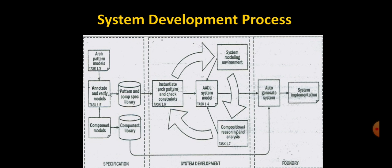This diagram represents the system development process. As you can see, the three phases are clearly marked with dotted lines: the specification phase, the system development phase, and the foundry phase. Now, one by one, we will see how these subsystems help us in the system development process.